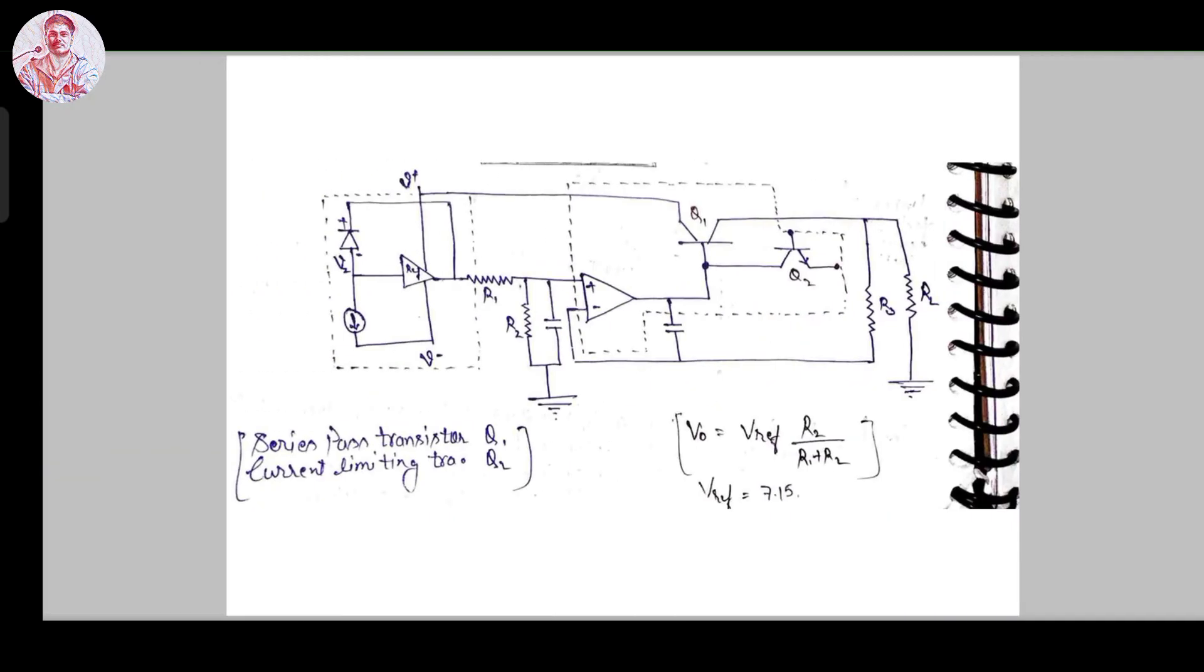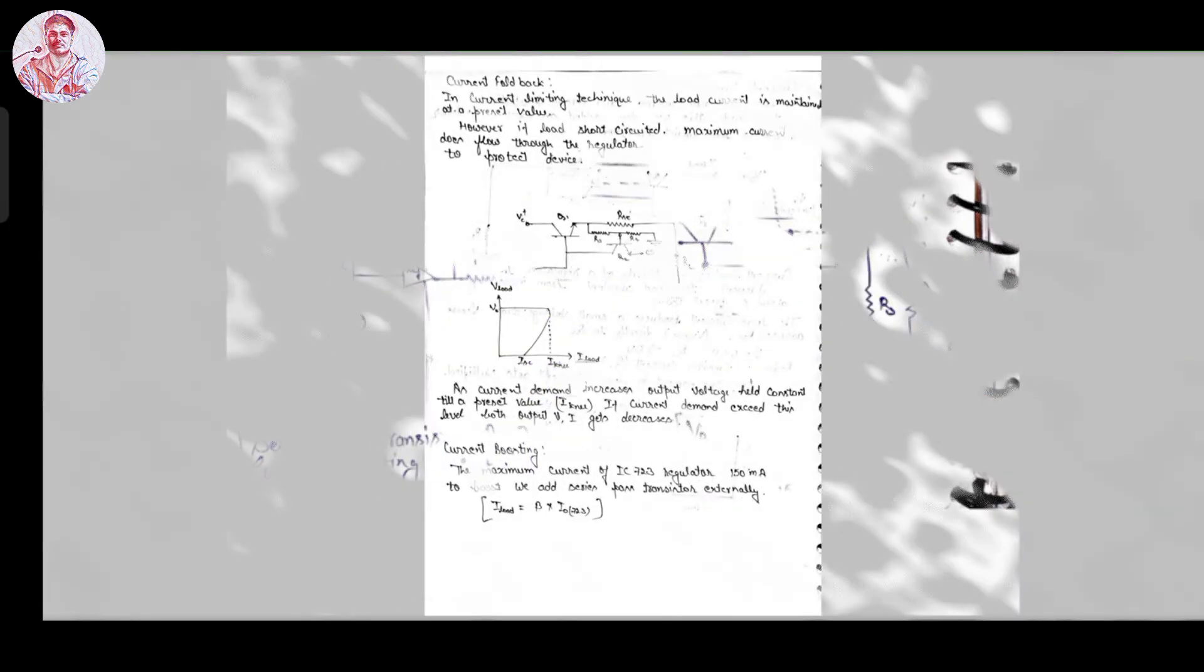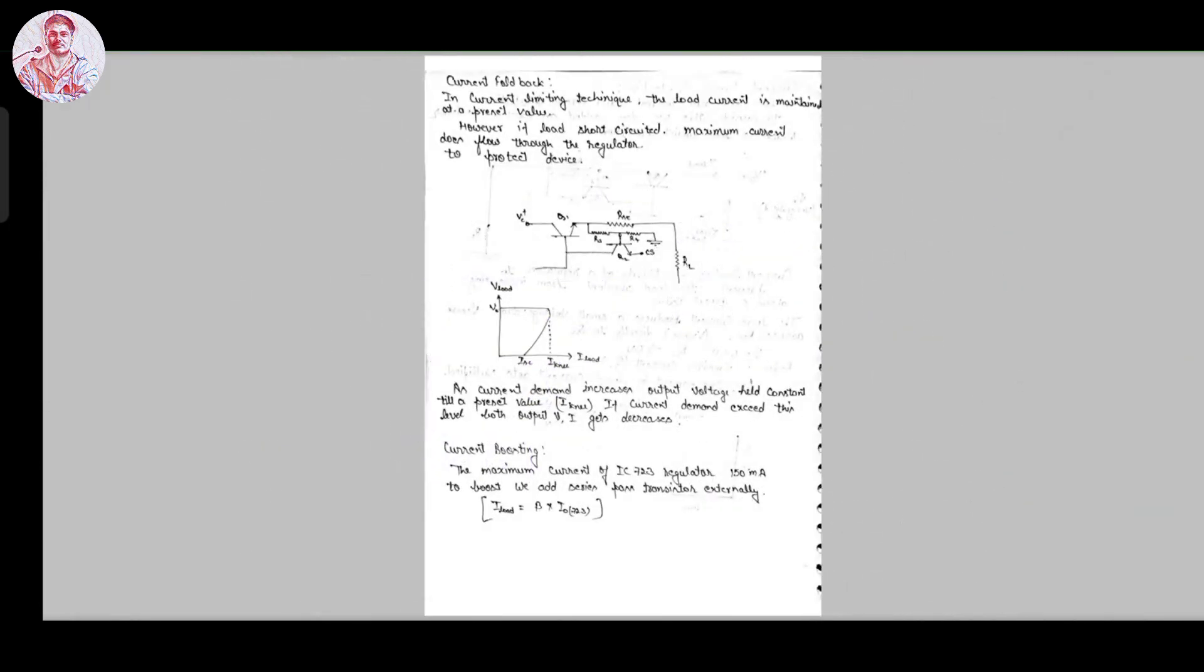Q1 is the series pass transistor and Q2 is the current limiting transistor. In current limiting technique, the load current is maintained at the preset value. This is the condition for overloading.